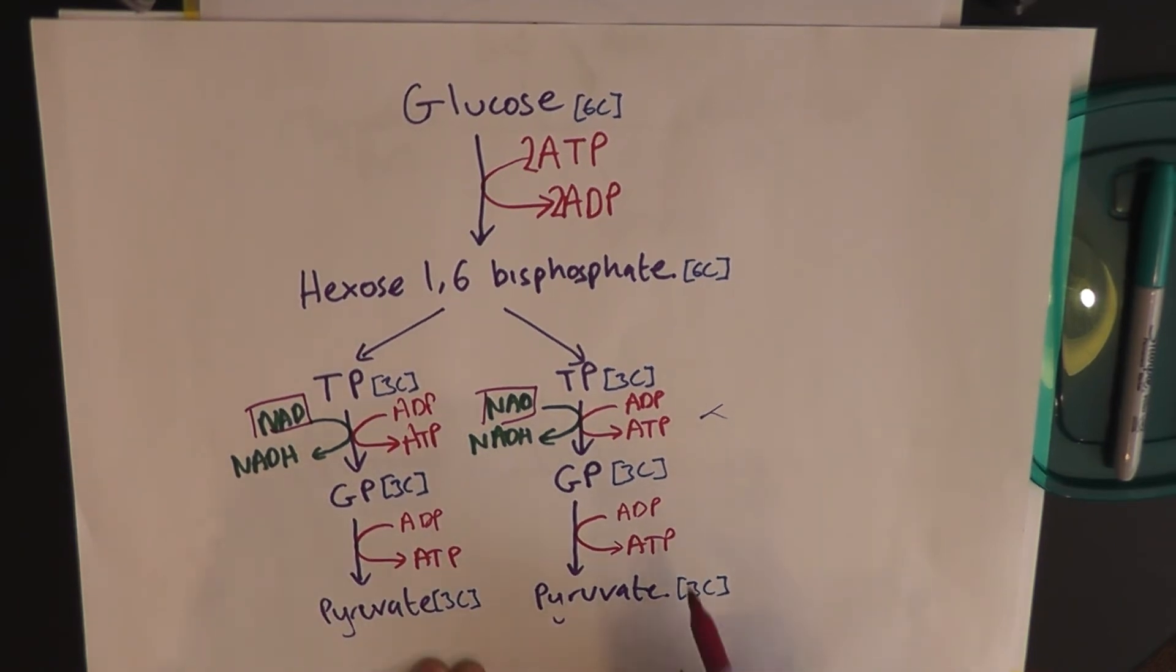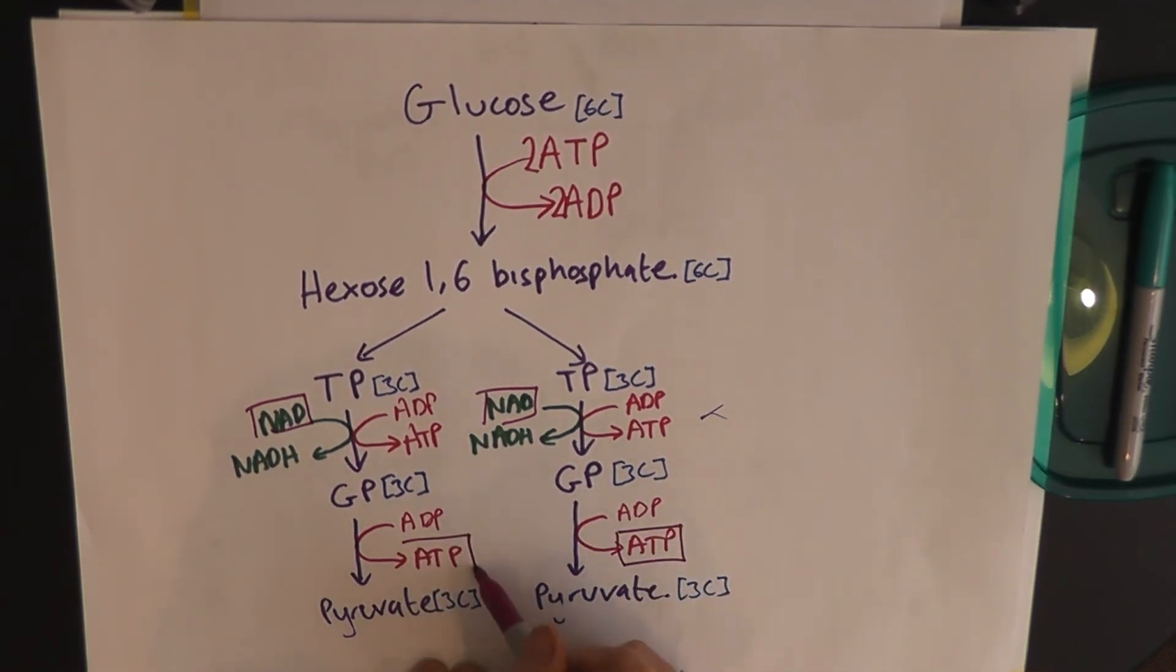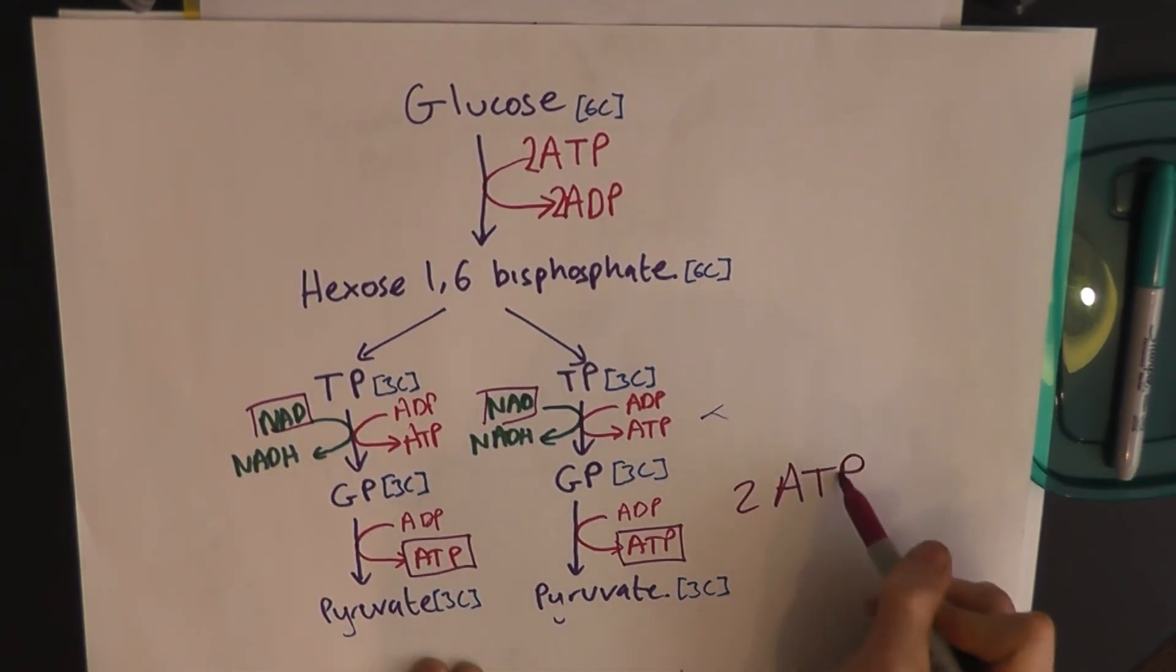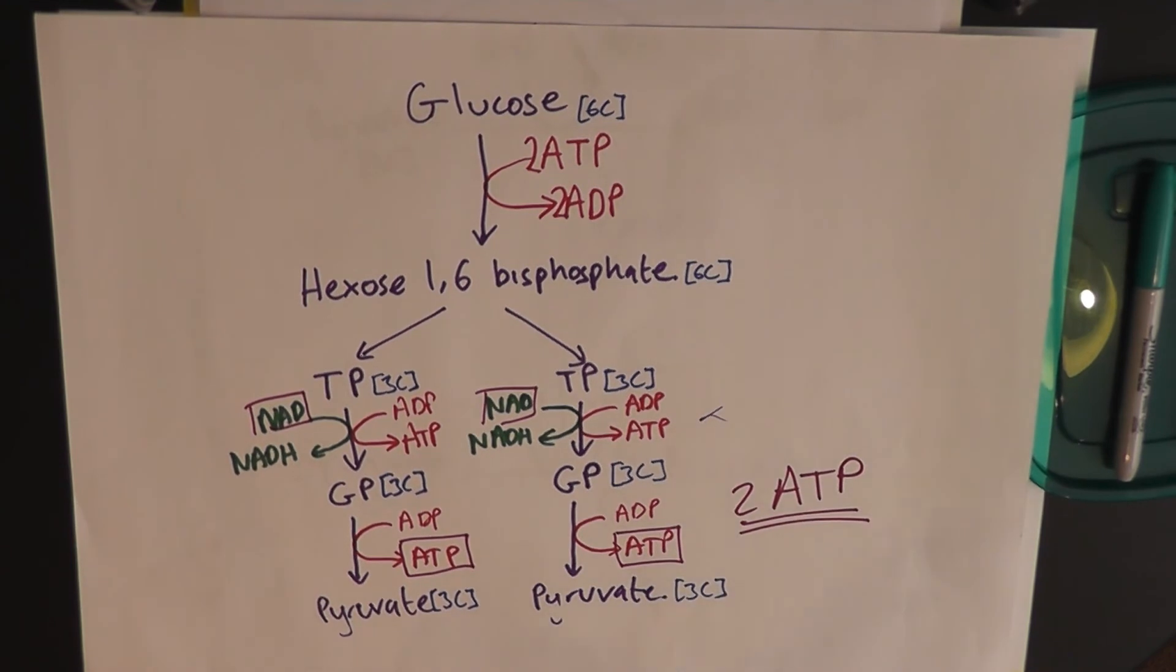But, we've got a net gain here of two ATP. Which is enough to keep us exercising or doing whatever we need to do for a short time without oxygen. And that is anaerobic respiration.